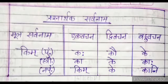And for kim: Pullingi — kah, kau, ke. Strillingi — ka, ke, kaha. Napunsakaling — kim, ke, kani.